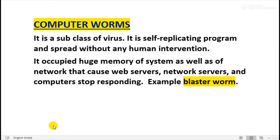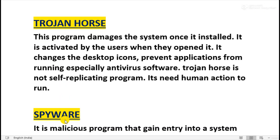The next malicious program is Computer Worms. It is a subclass of virus and a self-replicating program — meaning it spreads automatically without any human intervention. Computer worms occupy huge memory of the system as well as the network, causing web servers, network servers, and computers to stop responding. An example of a computer worm is Blaster Worm.